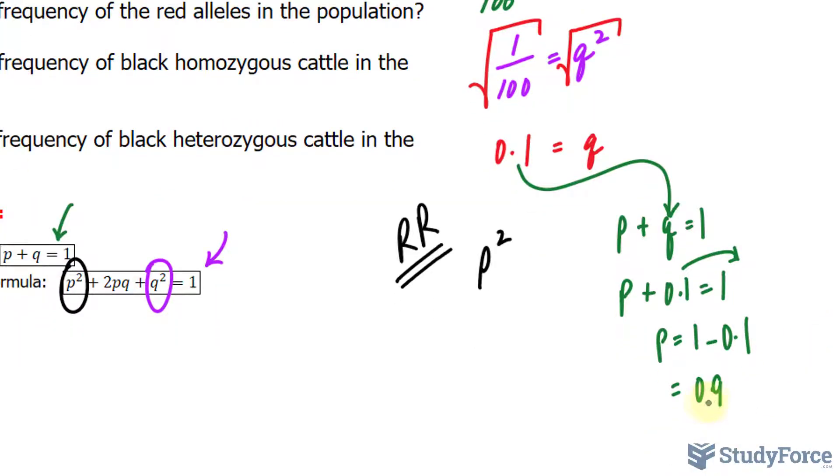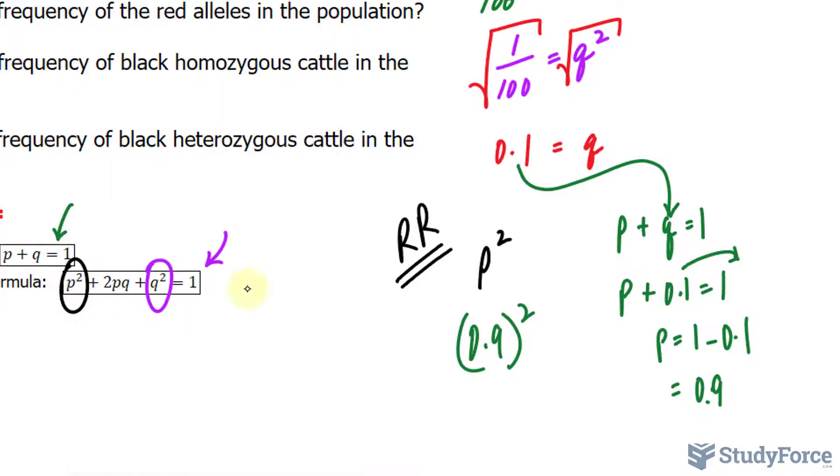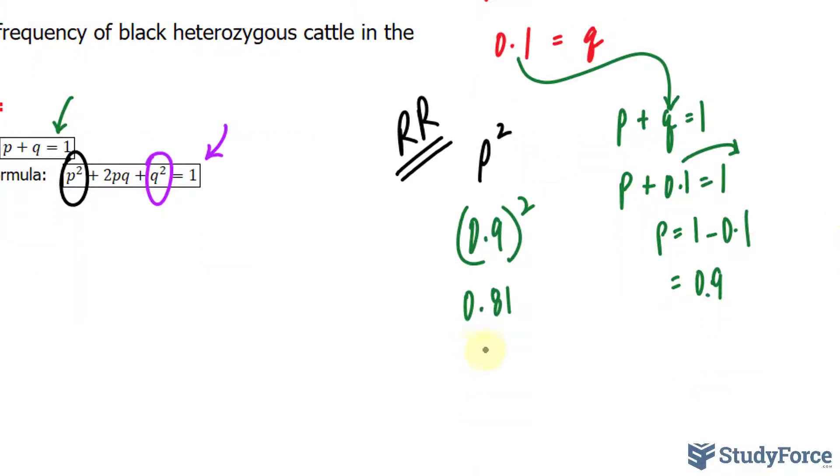So I'll take 0.9, sub it into there, 0.9 to the power of 2, and I end up with 0.81. 0.81, or to make more sense of it, 81 out of 100 cattle will have a homozygous genotype that is capital R, capital R. And that's equivalent to 81%.